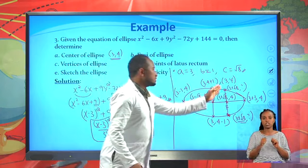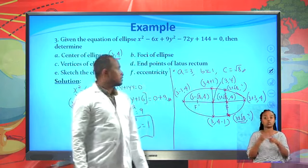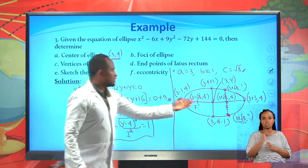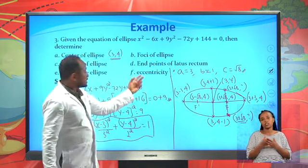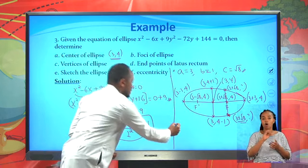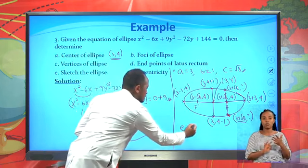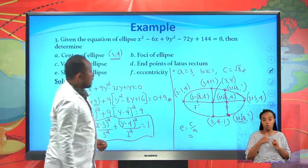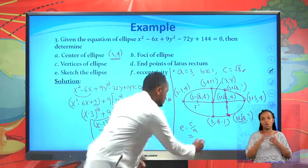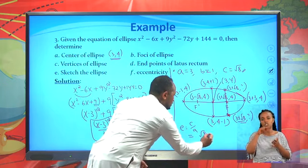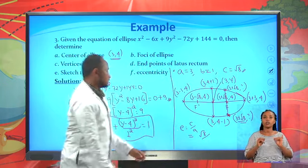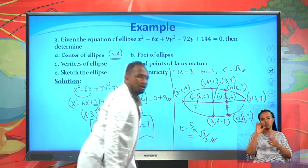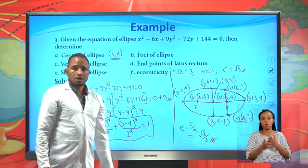We have also sketched the ellipse. The eccentricity is given by e = c / a. Since c = √8 and a = 3, the eccentricity of this ellipse is √8 / 3.